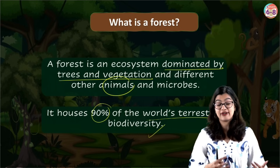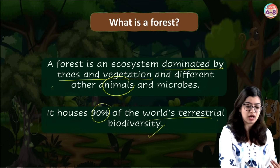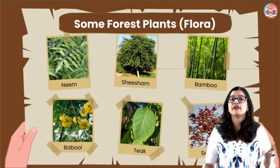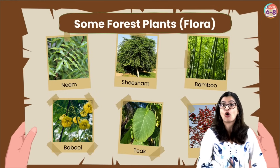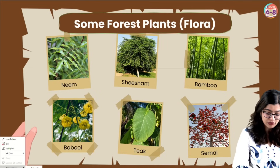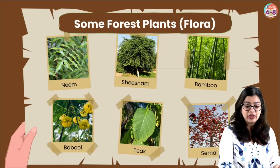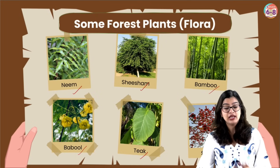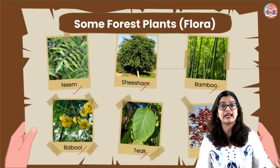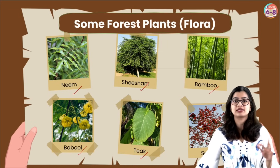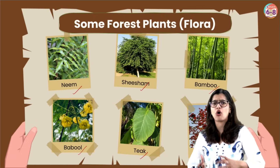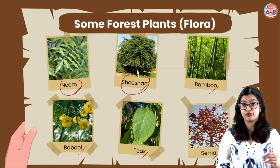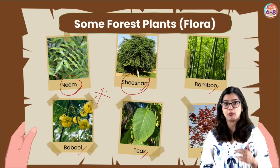When we talk about forests being covered with a large number of trees and vegetation, all the plants we find are called the flora of the forest. Some examples of trees found in forest areas include neem, babul, teak, shisham, bamboo, and simal. These examples are important from an examination point of view, as exams may ask you to identify combinations of plants and animals found in the forest.